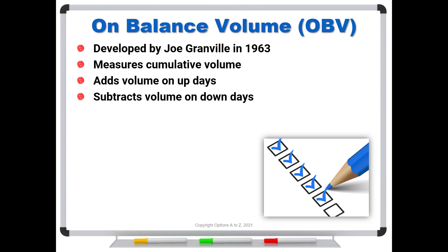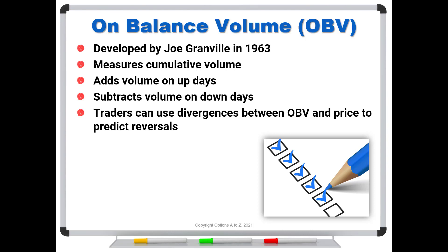The basic idea is that traders can use divergences between OBV and price to predict reversals. Most of your technical indicators have a divergent type of interpretation to them, and OBV does as well. But you can also use it to confirm trends. So if we're seeing that the stock prices are running up, is this a trend we can have confidence in? Well, let's go take a look at OBV. And if OBV is also showing a very strong uptrend, then yes, more of the volume is being attributed to the up days.